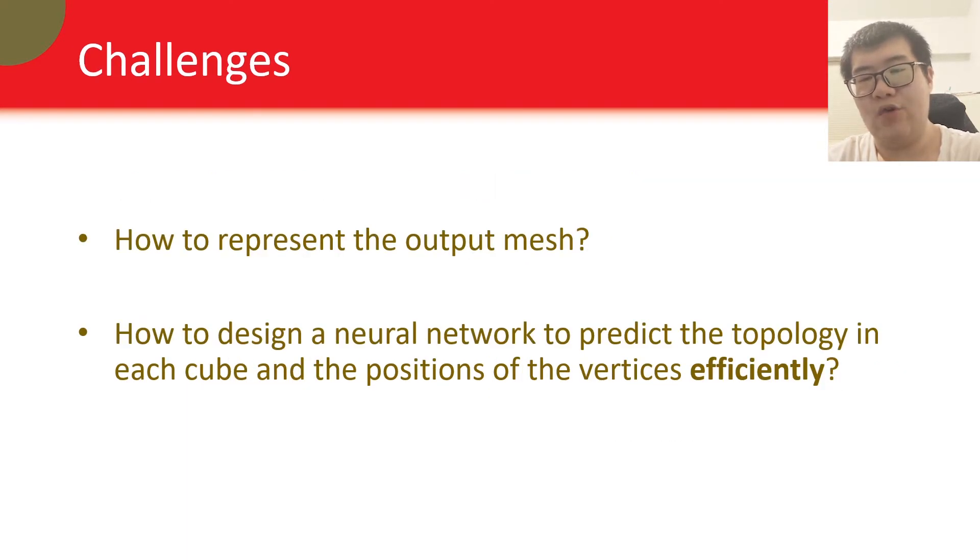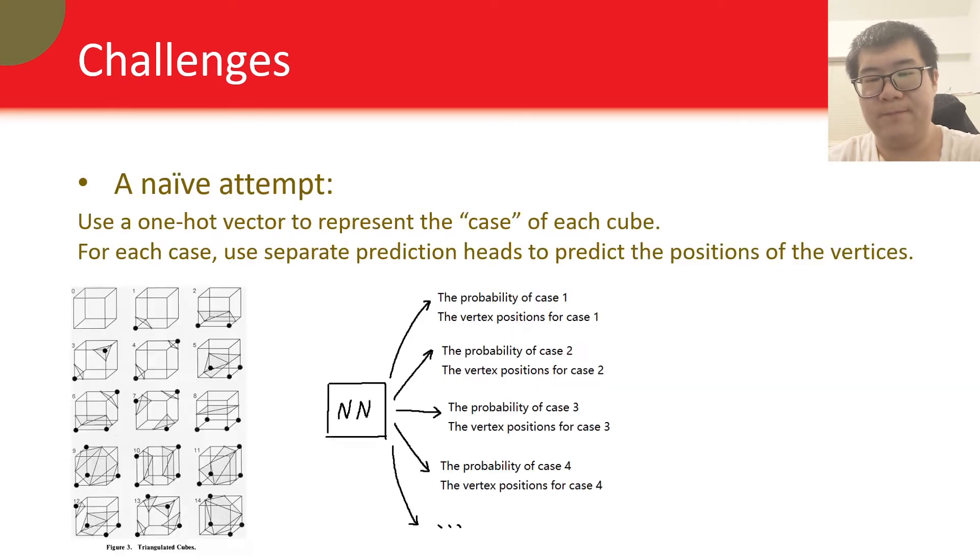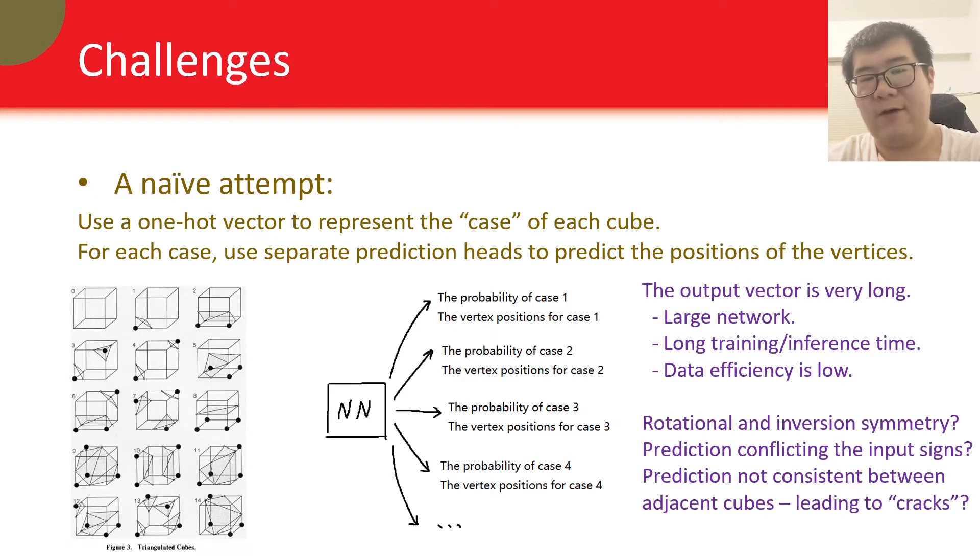The key challenge to that is how we represent the output mesh. How can we use a neural network to predict the topology in each cube, and the positions of the vertices in an efficient way? Here is a naive example that is not efficient. Due to the timing of this video, I will skip this part, but you are welcome to pause the video and think of it. I have also listed a few problems of this example here.